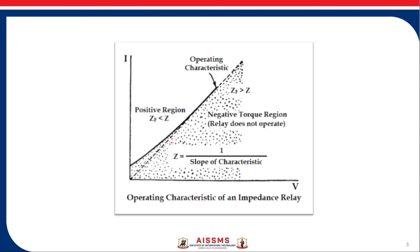The slope of characteristic must be calculated and impedance, the predetermined value of Z, is the reciprocal of that slope of characteristic.